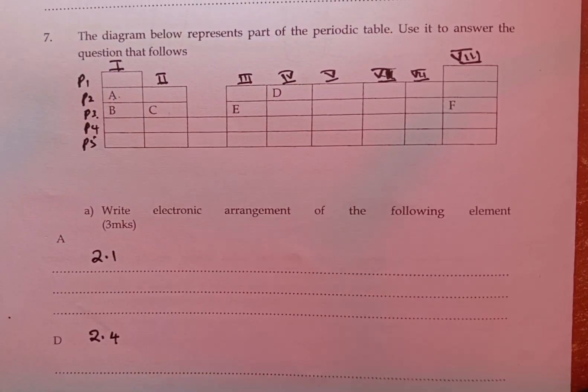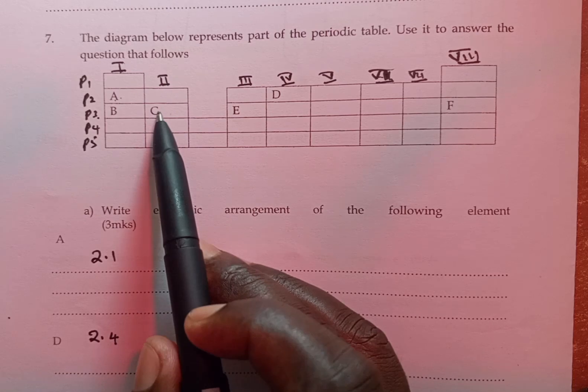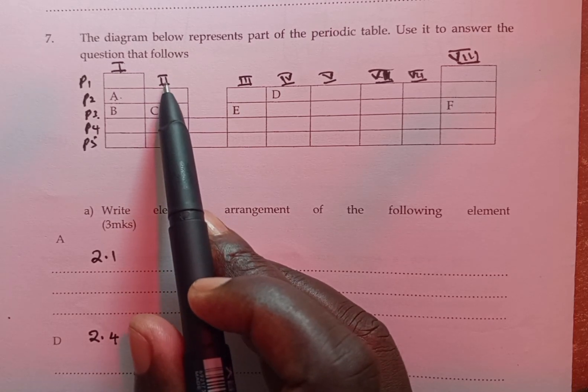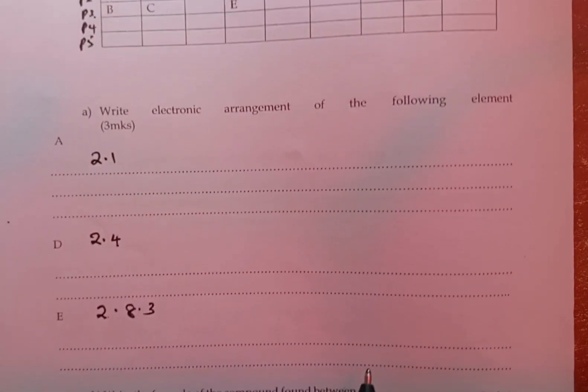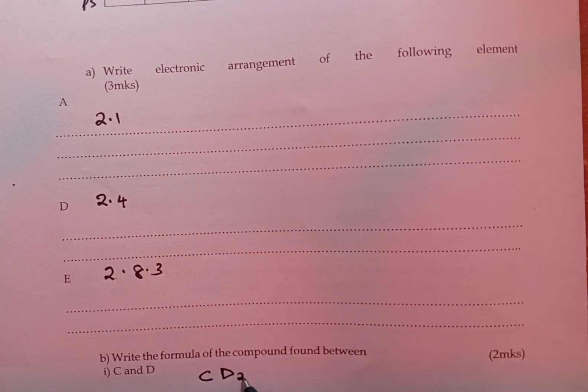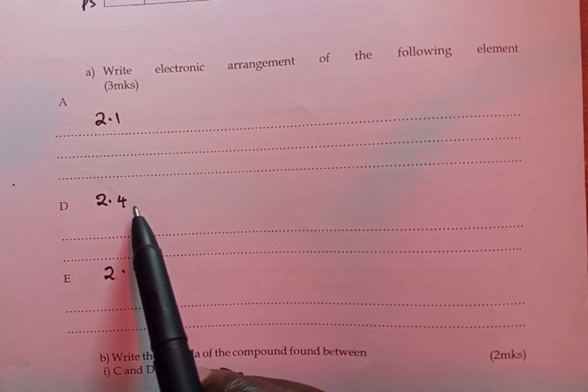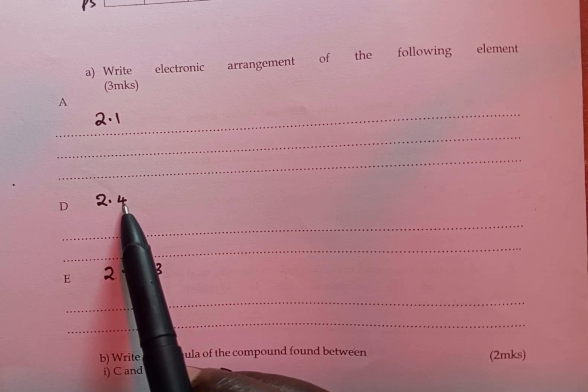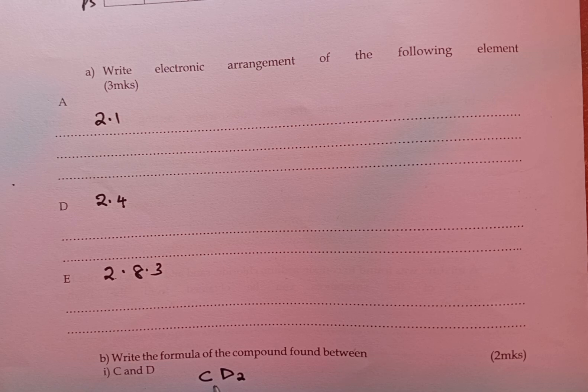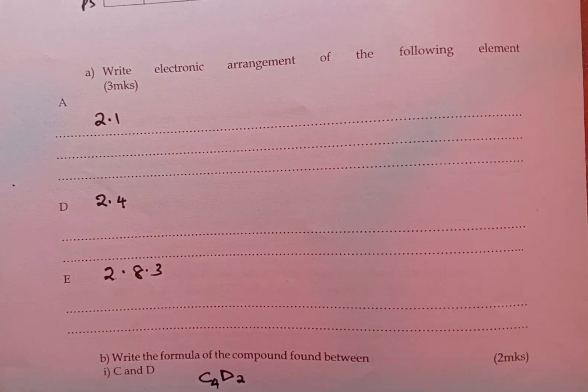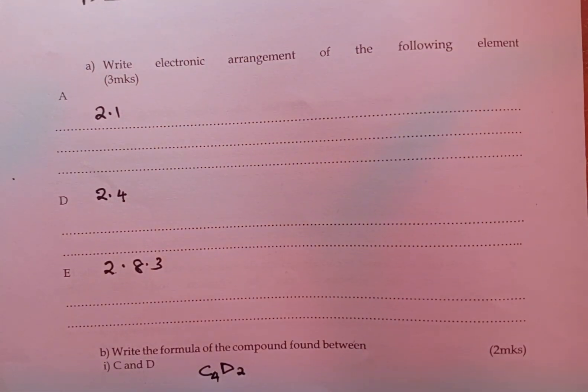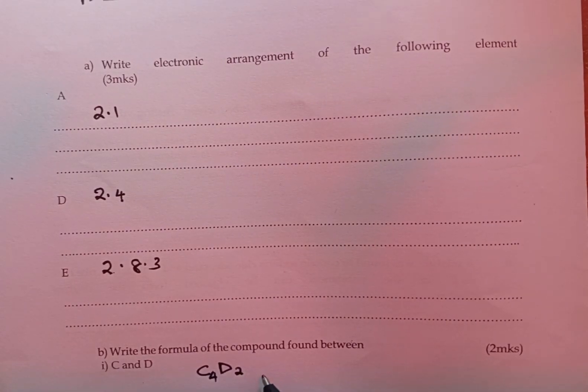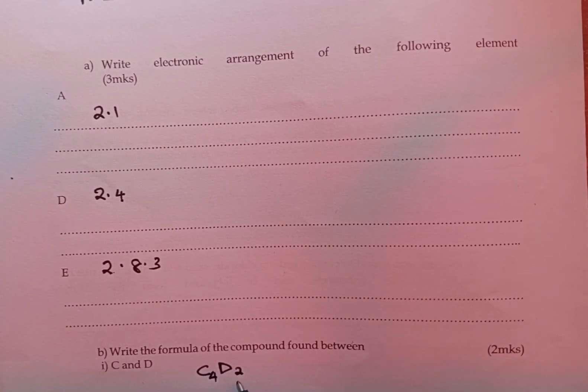So C, as you can see, is in group 2 of the periodic table, meaning it has a valency of 2, that is going to give to D. Then D is in group 4, meaning the valency of D is going to be 4, and therefore it is going to give it to C. And this one can also be written by simplifying it as C2, then D.